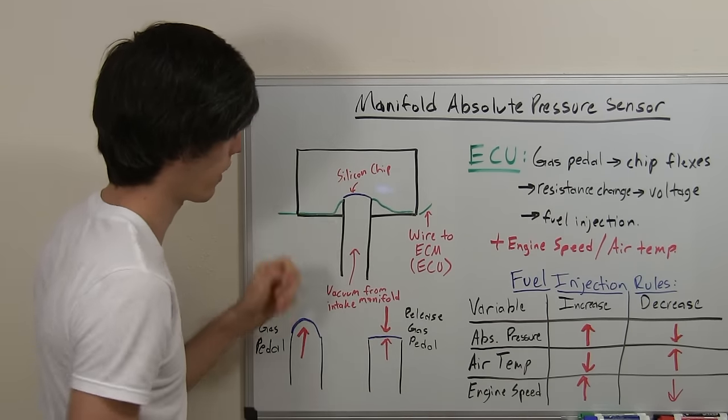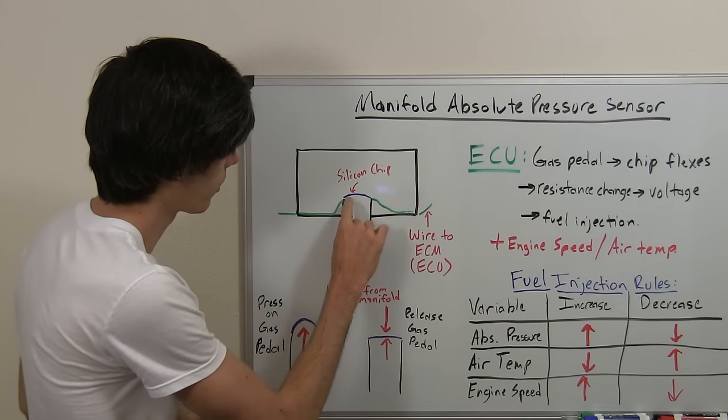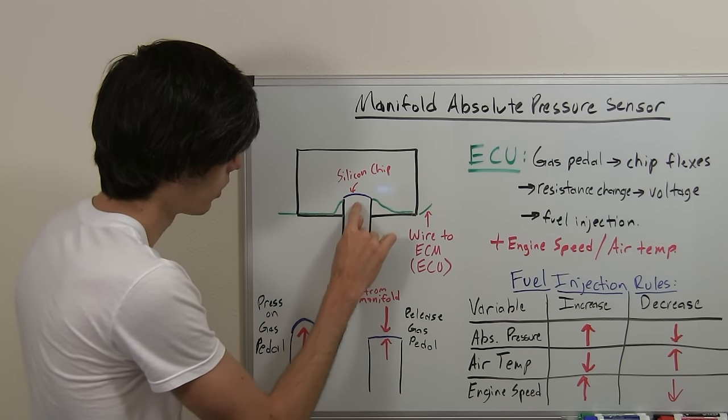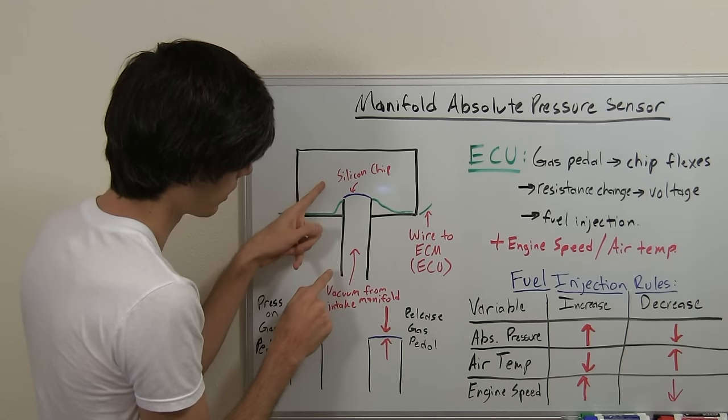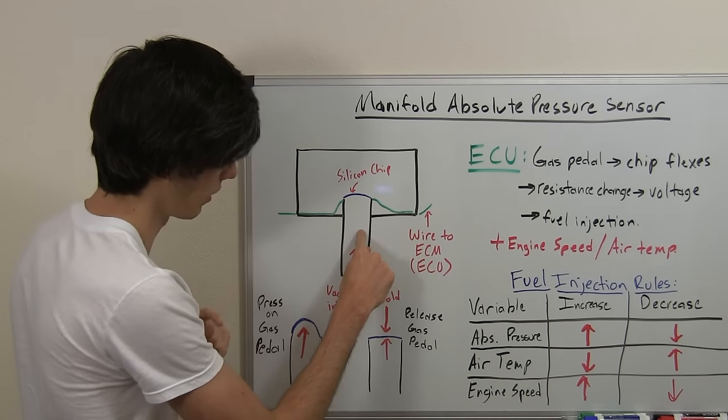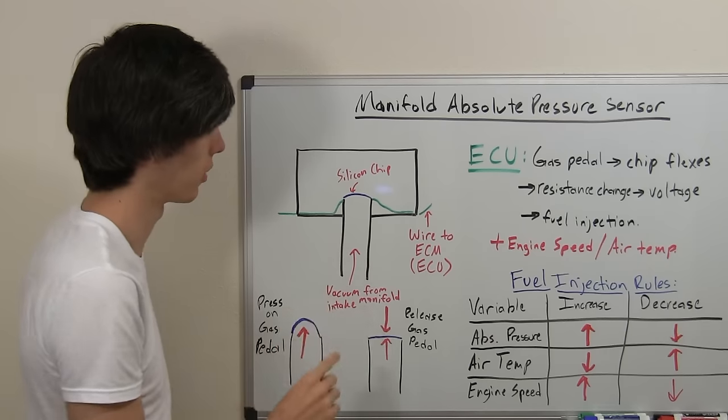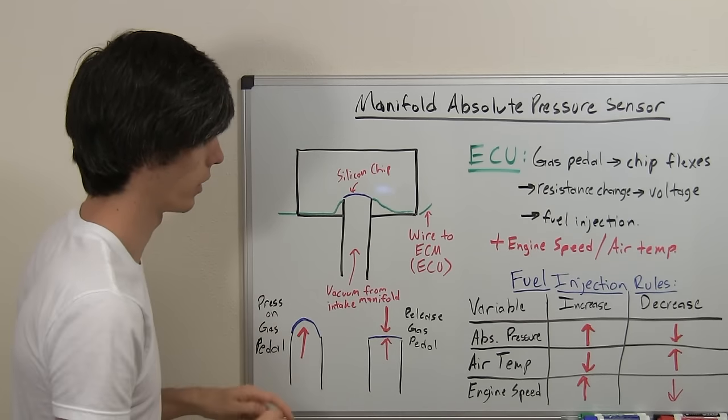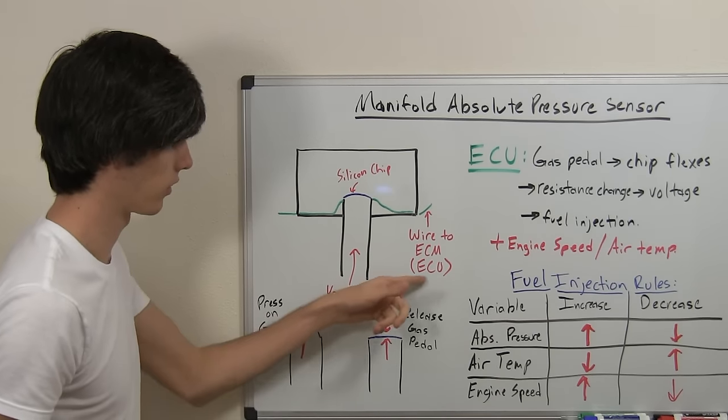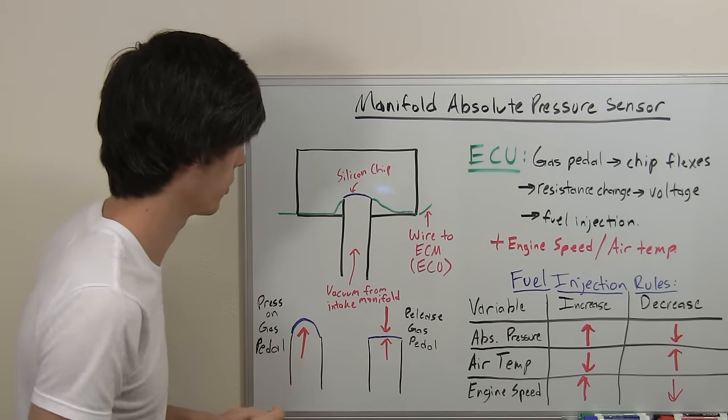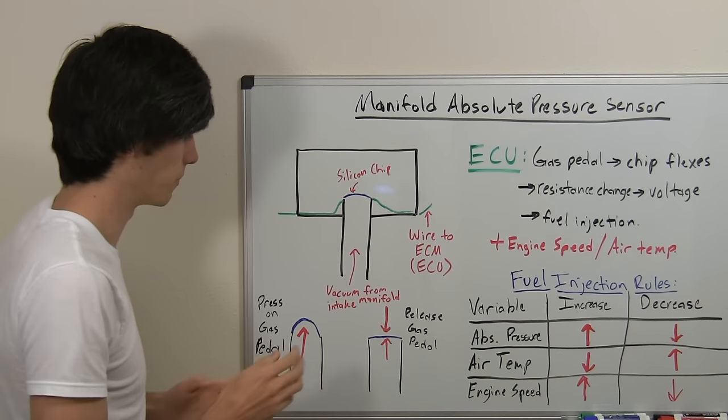So let's just call it a vacuum for this purpose and then we've got a silicon chip which will be the divider between the vacuum and the vacuum from the intake manifold. Now this silicon chip is flexible and it's got a current running through it and that reading is being sent off to the ECM or the ECU, the ECM, a part of the ECU.